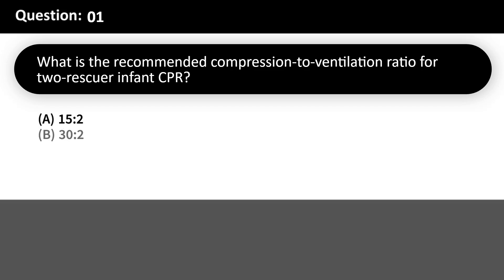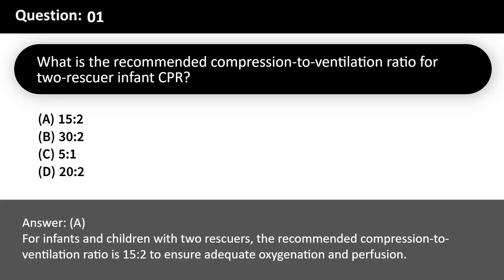What is the recommended compression-to-ventilation ratio for two-rescuer infant CPR? A. 15:2. B. 30:2. C. 5:1. D. 20:2. Answer: A. For infants and children with two rescuers, the recommended compression-to-ventilation ratio is 15 to 2 to ensure adequate oxygenation and perfusion.